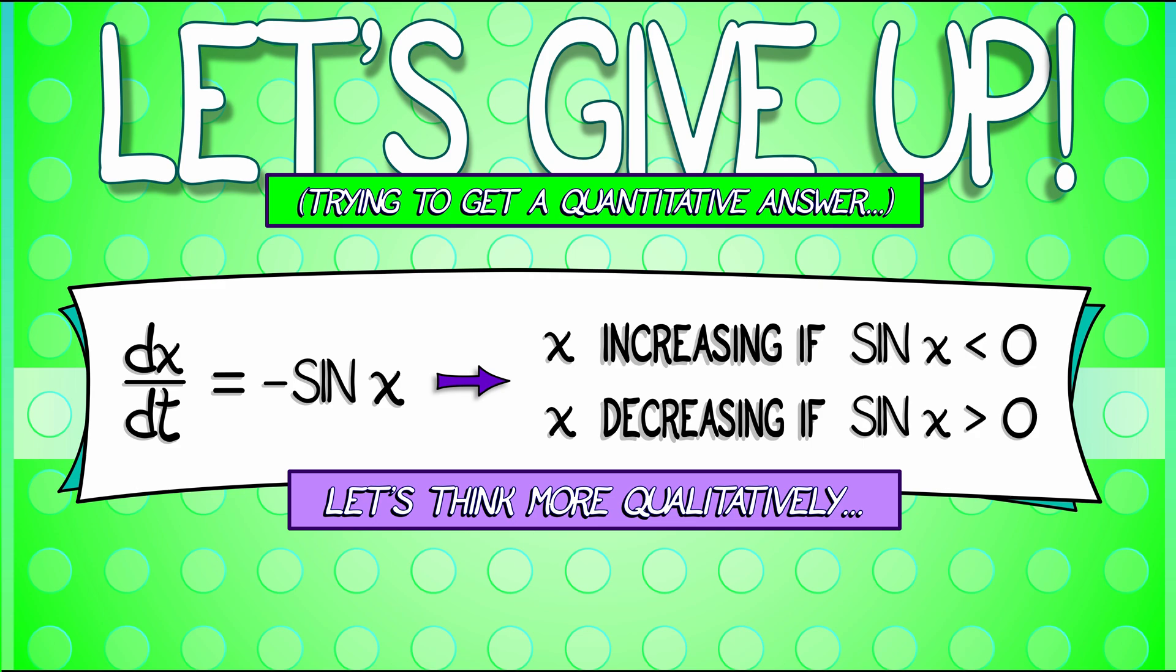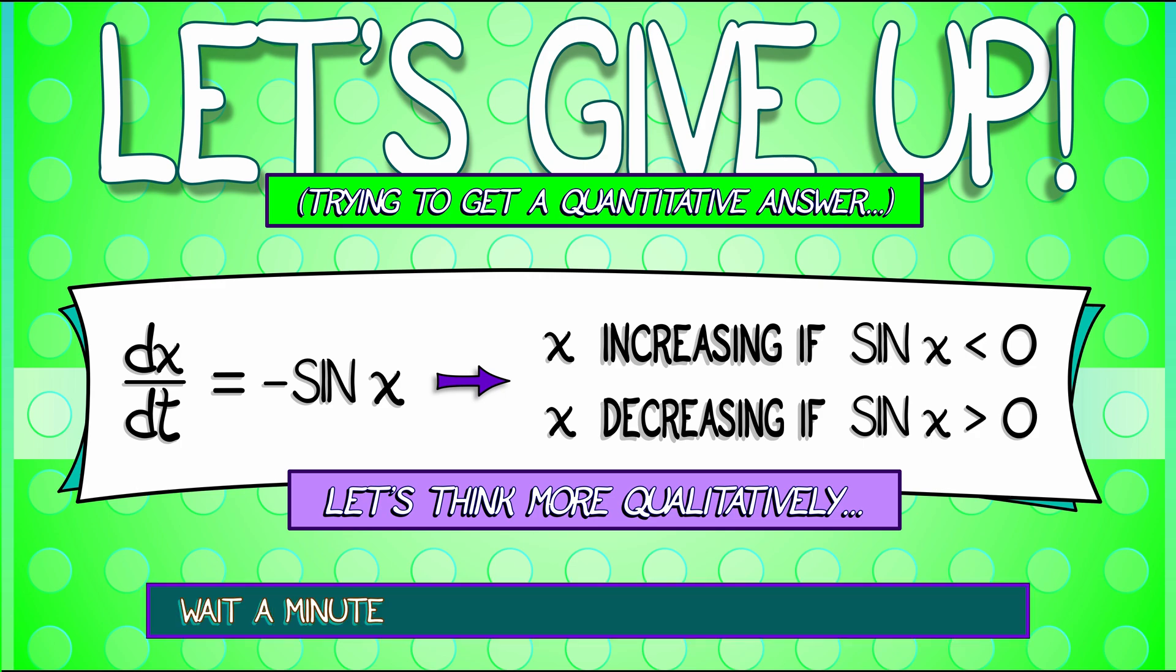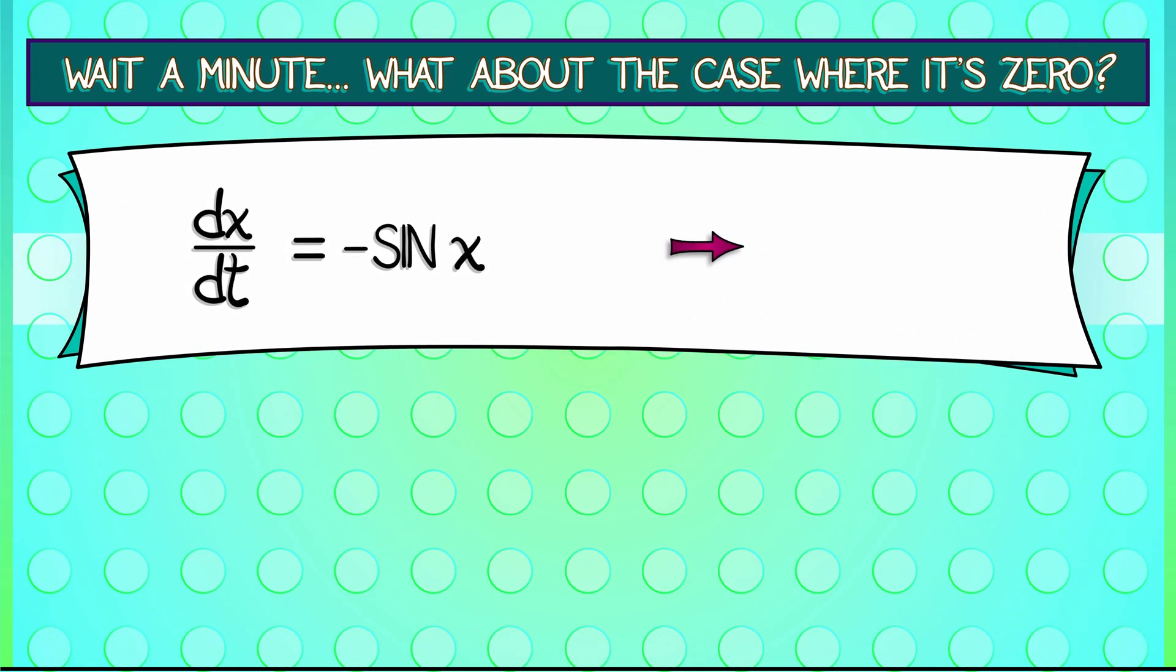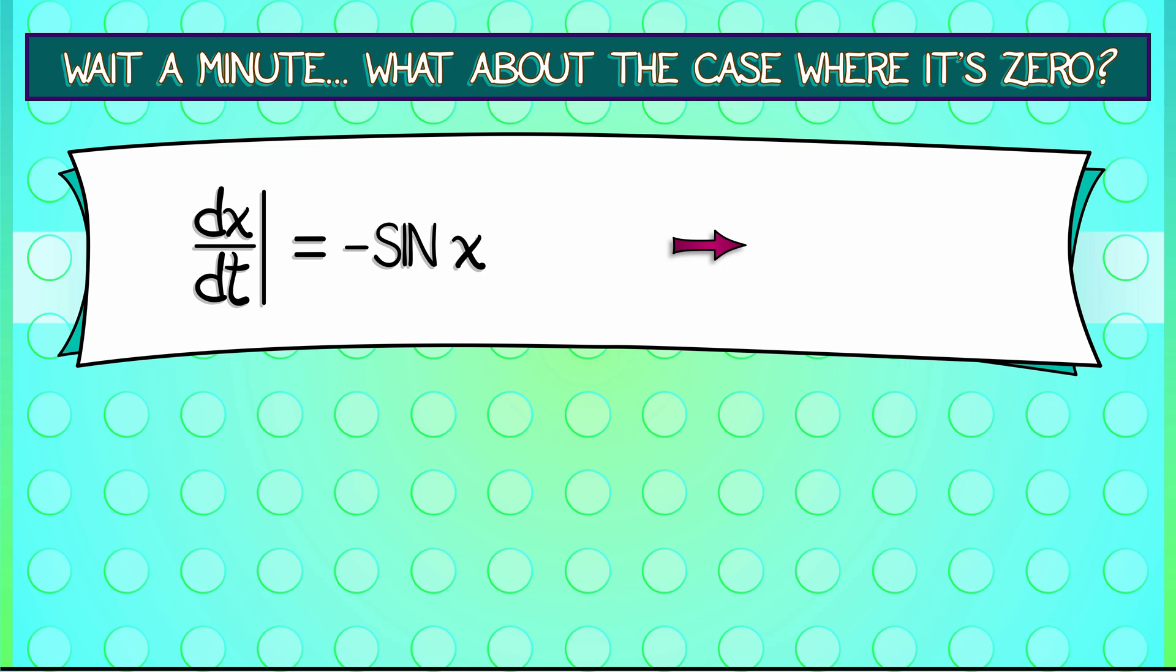Wait a minute. I covered the case when sine of x is negative. I covered the case when sine of x is positive. What happens when it's zero? Oh, this is interesting. Let's consider what happens when we start off at the value x equals zero. What is dx/dt evaluated at zero?